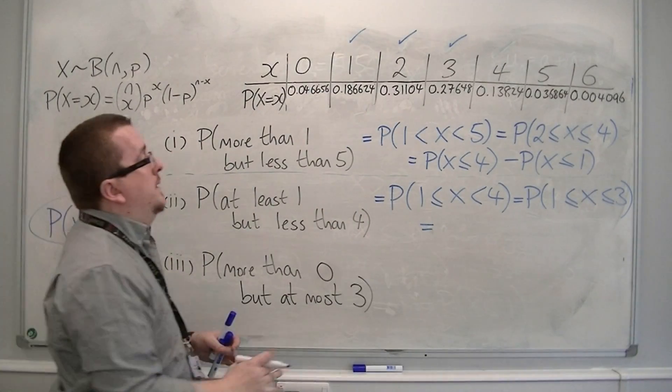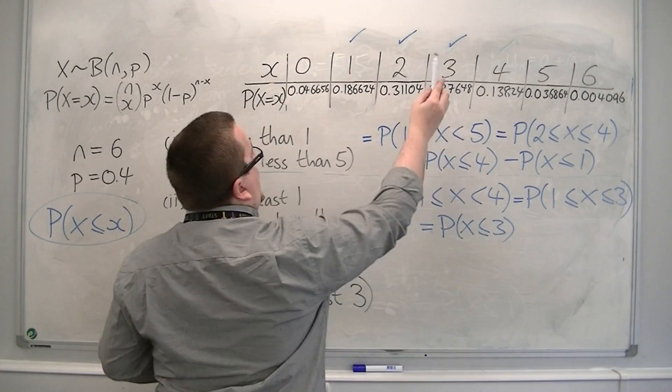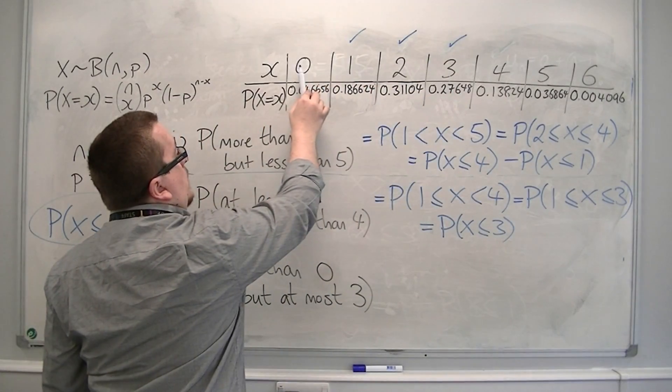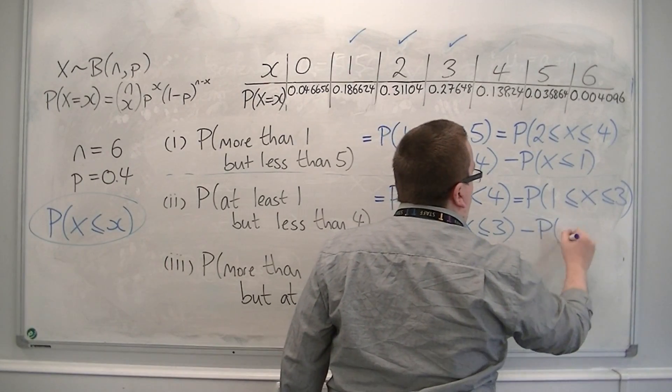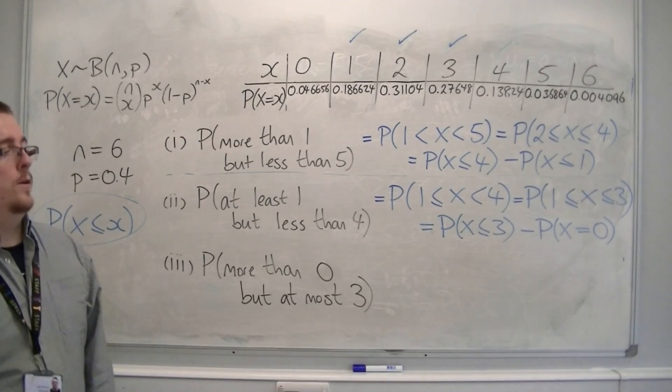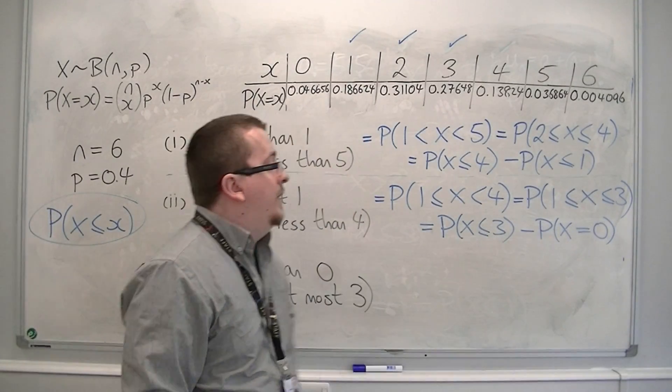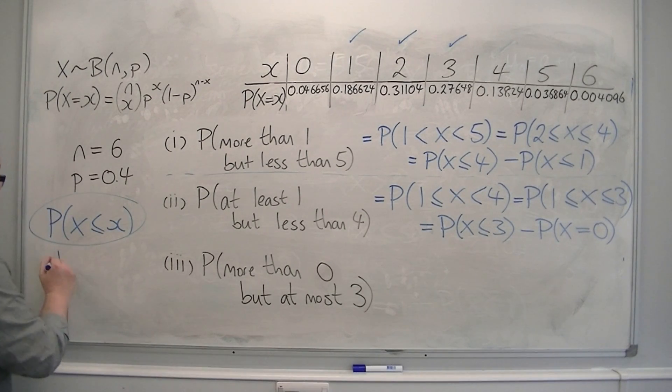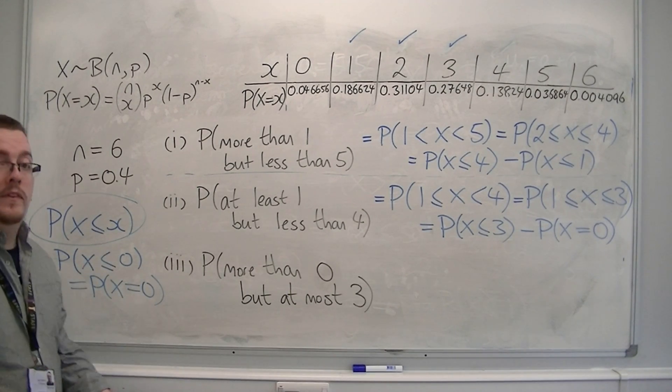So I can calculate that by finding the probability of x being less than or equal to three, which will give me three, two, one, and zero, and then subtract zero, so the probability of x being equal to zero. So you can see that as x is less than or equal to zero. The probability of x being less than or equal to zero is exactly the same as the probability of x being equal to zero.